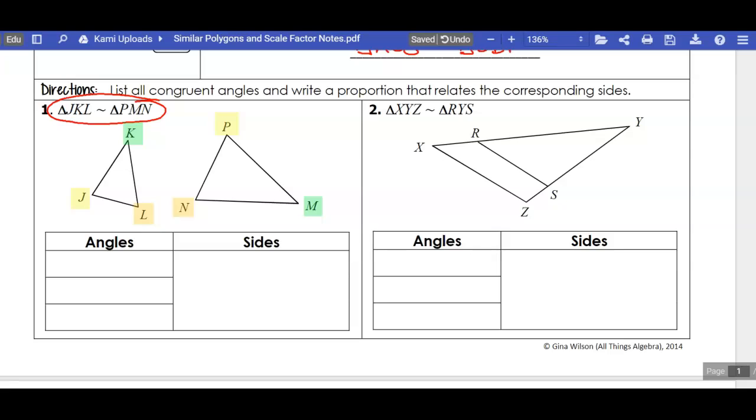We know that angle J is going to be congruent to angle P, and angle K is going to be congruent to angle M. And then our last pair of angles, angle L, is going to be congruent to angle N. So corresponding angles are congruent.